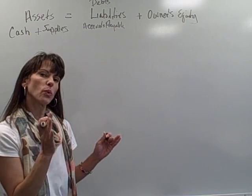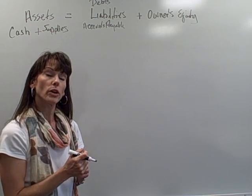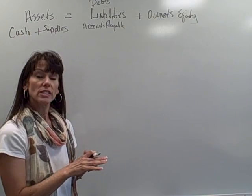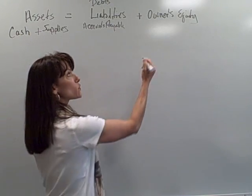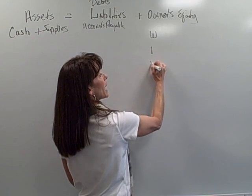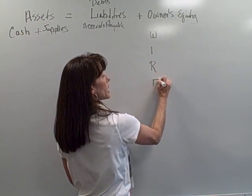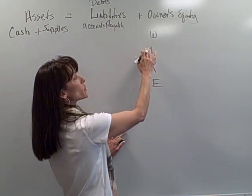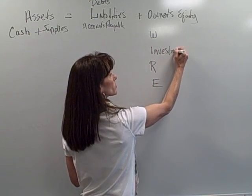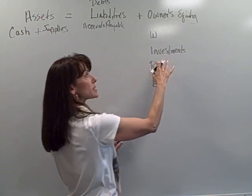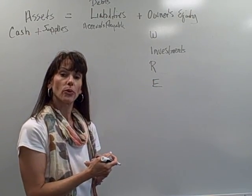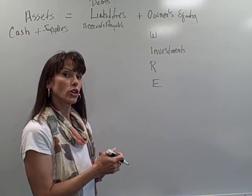Owner's equity is what we used in the last video, but now we're going to expand on it. Owner's equity is affected by four things. An easy way to remember them is W-I-R-E, or 'wire.' It's affected by investments that the owner makes — a personal investment in the business to help give it money when it's starting out.